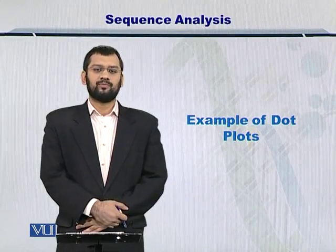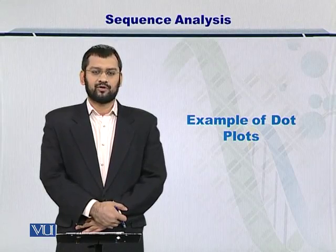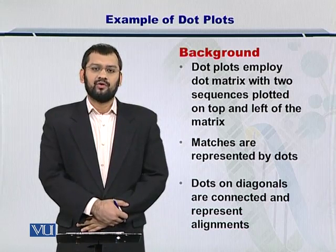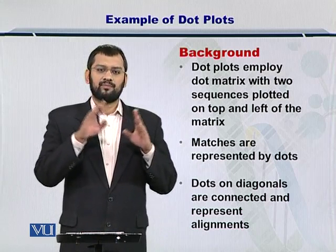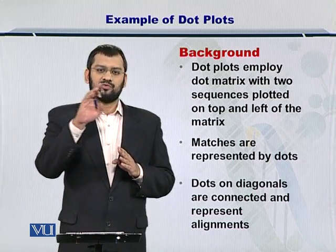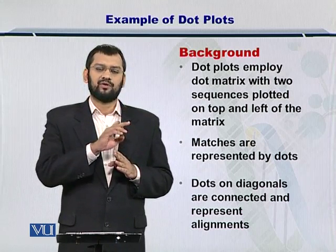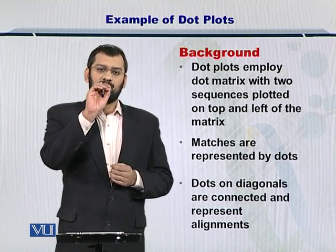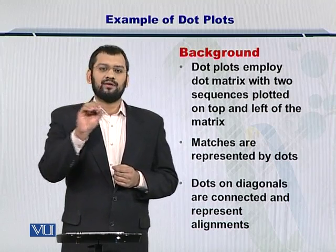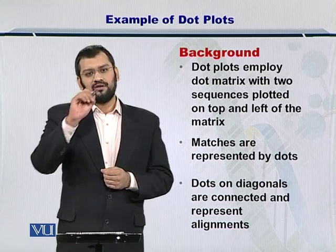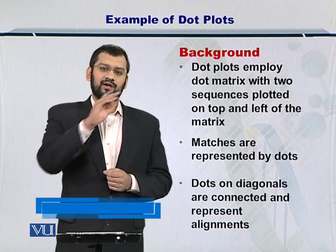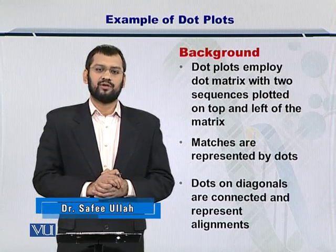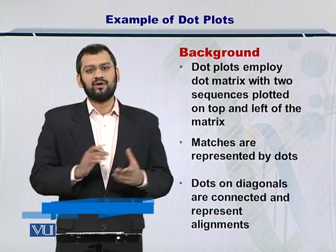Dear students, in this module I'm going to provide you with two examples of dot plots. To start, let's first review what dot plots are. Dot plots employ a dot matrix representation where you place the two sequences you are trying to align on top and on the left side. The nucleotides or amino acids that matched are represented by dots within the matrix. You then connect dots that lie adjacent to each other on the diagonal, and dots non-adjacent to any other dot are treated as noise.